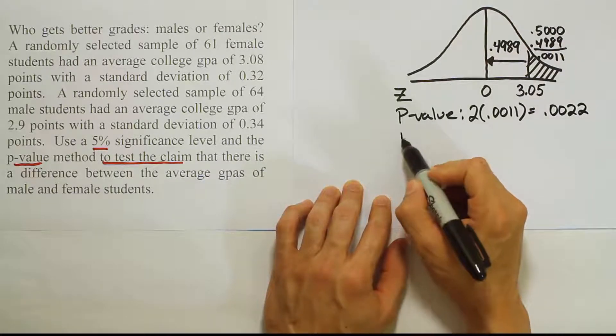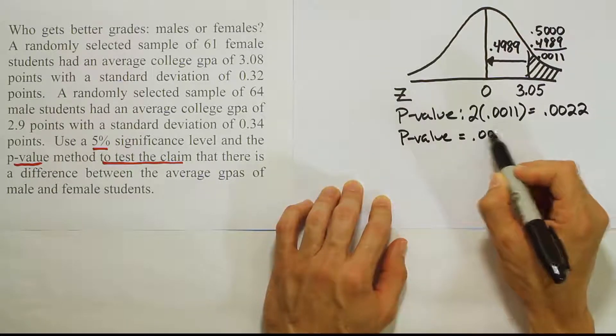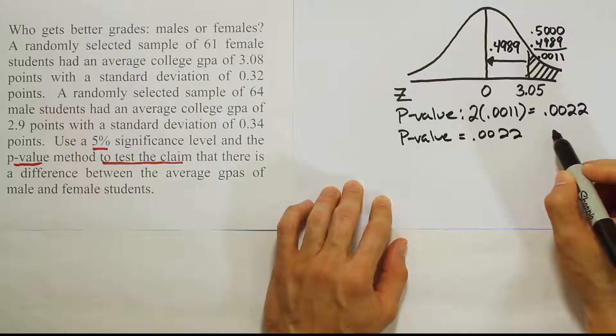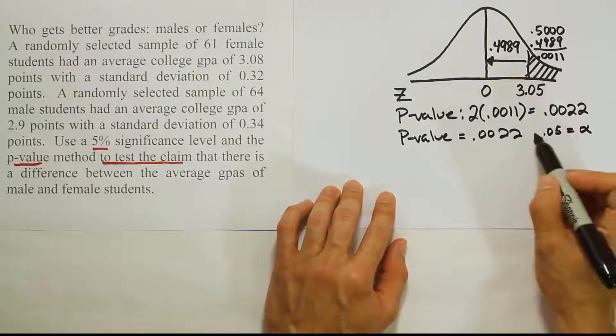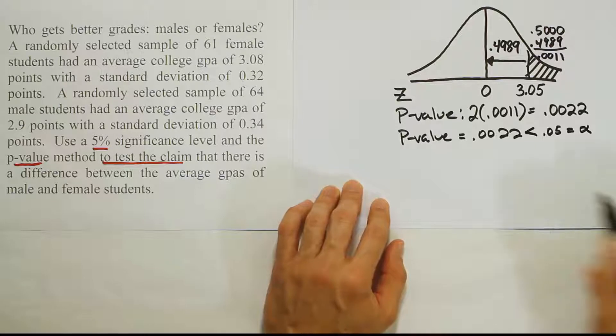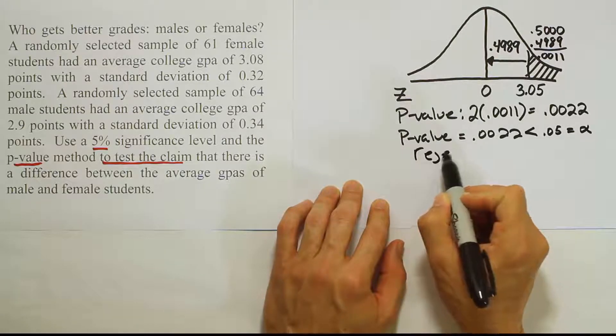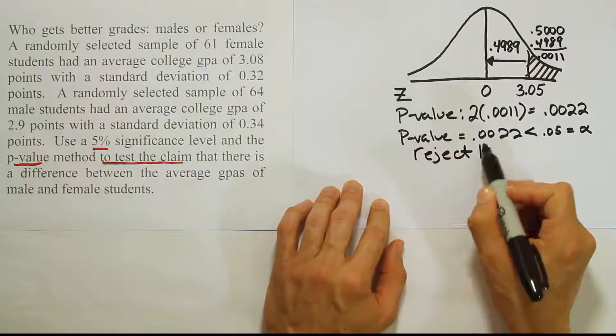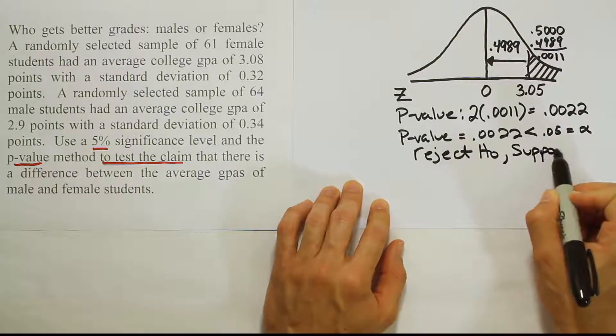Now let's compare that p-value. So the p-value is equal to 0.0022. Let's compare that to alpha, which is 5%, 0.05. Now how does that compare? Well, it means that the p-value is less than alpha. So we have a rule that says when the p-value is less than alpha, we reject H0. So we're going to conclude that we should reject H0 and therefore support HA.